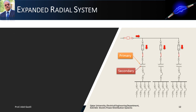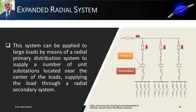An improved configuration of the radial type distribution system is the expanded radial system. This system can be applied to large loads by means of a radial primary distribution system to supply a number of unit substations, which are located near the center of the loads, and supplying the loads through a radial secondary system.